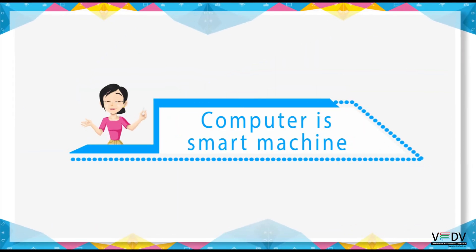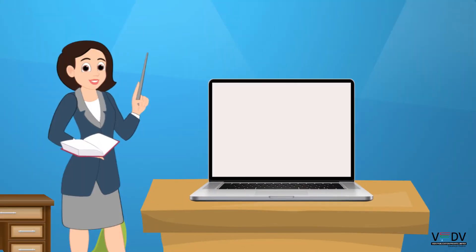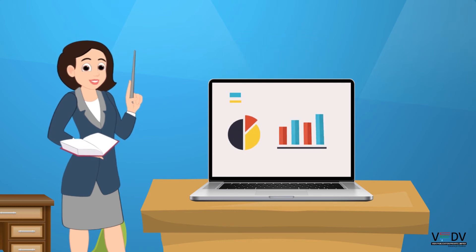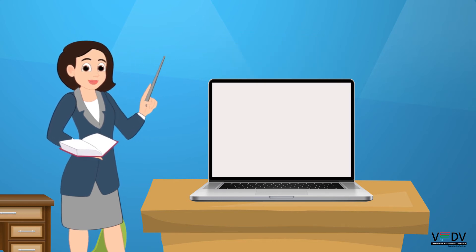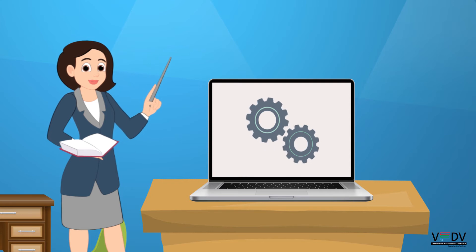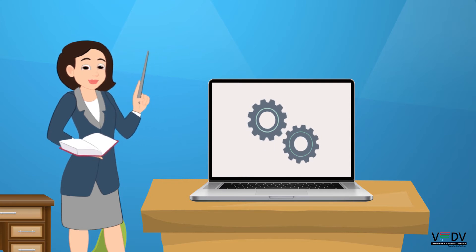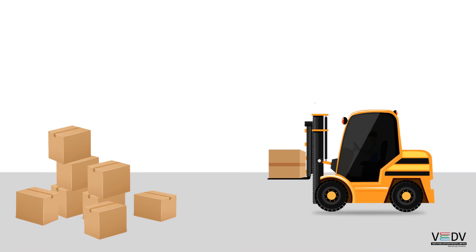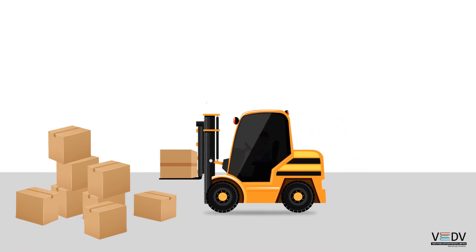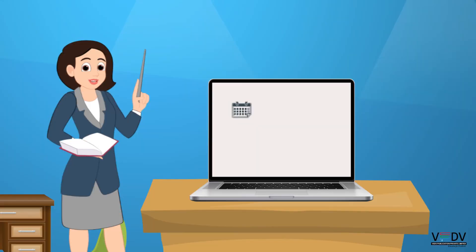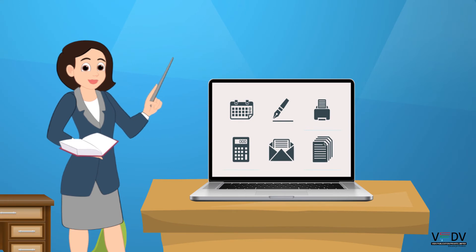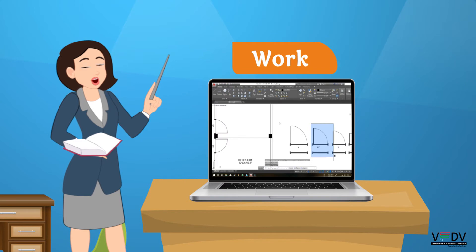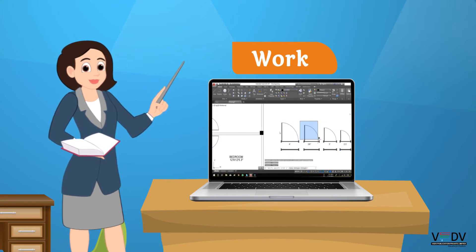Computer is a smart machine. Computer is a wonderful machine which can do jobs and do them well. Computer can do work very easily. Data can be processed every single time. Computers can do many kinds of work. Some people use it for work, some people use it to play games.